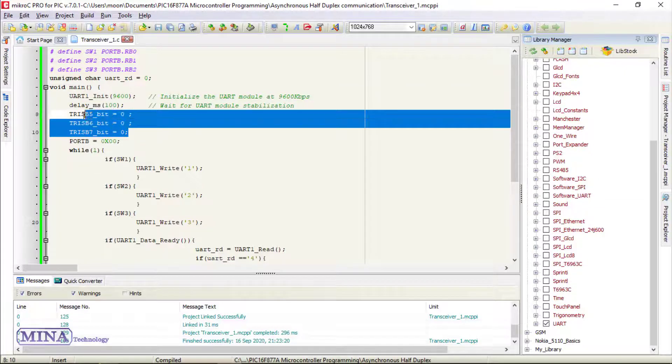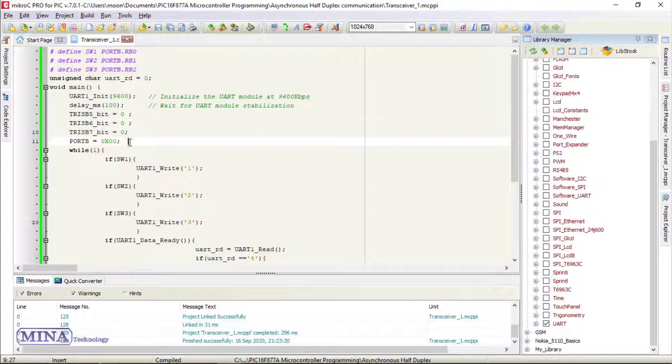Now, we have set the RB5, RB6, and RB7 pins as output by clearing the TRISB register. Now, we have cleared the port B register. In the main loop, we have created 3 if statements.